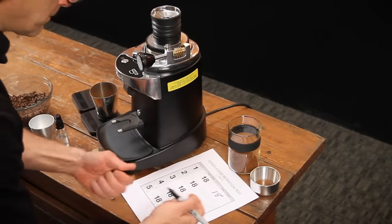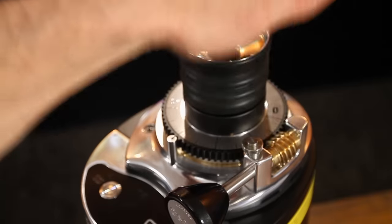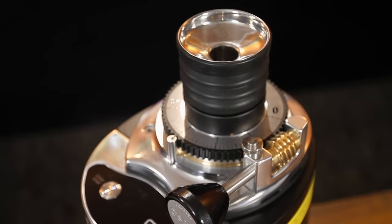Now this grinder looks a little different than most. Starting at the top here there's no hopper, just a funnel mounted in a bellows. More on that in a minute.